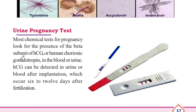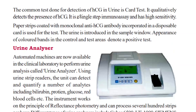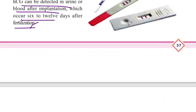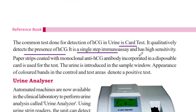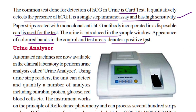Most chemical tests for pregnancy look for the presence of the beta subunit of HCG — human chorionic gonadotropin — in blood or urine. HCG can be detected in urine or blood after implantation, which occurs 6 to 12 days after fertilization. The common test for detection of HCG in urine is the card test, which qualitatively detects the presence of HCG. It is a single-step immunoassay with high sensitivity. A paper strip coated with monoclonal anti-HCG antibody is incorporated in a disposable card. The urine is introduced in the sample window; appearance of colored bands in the control and test area denotes a positive test.